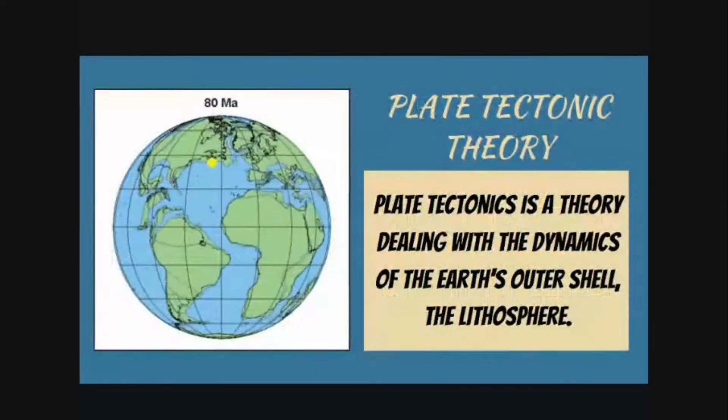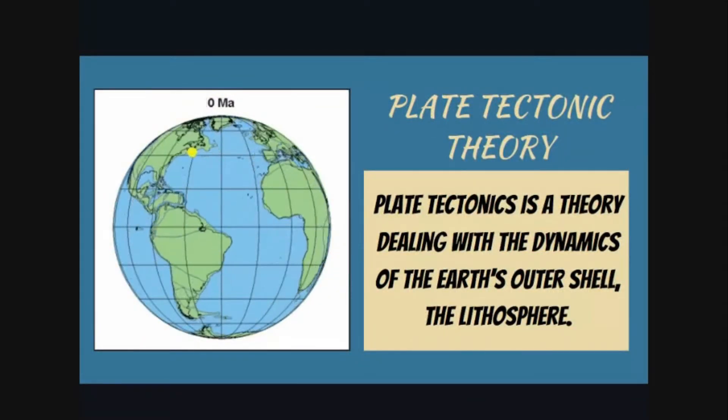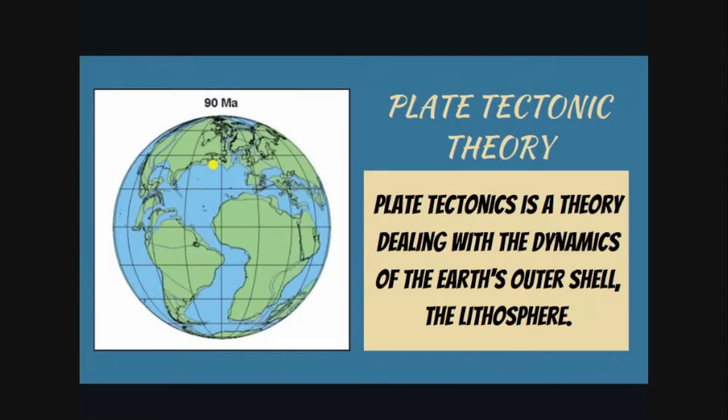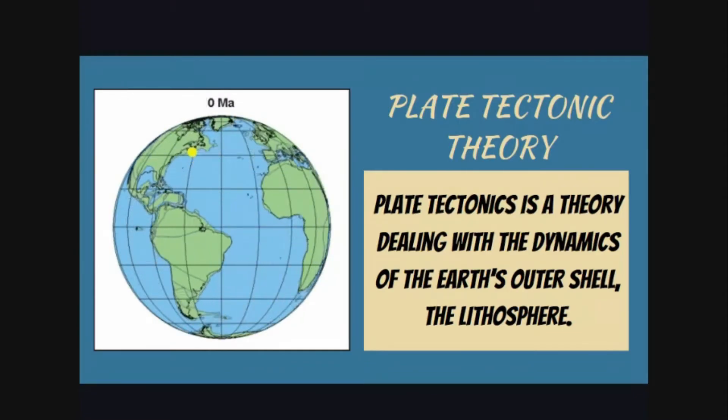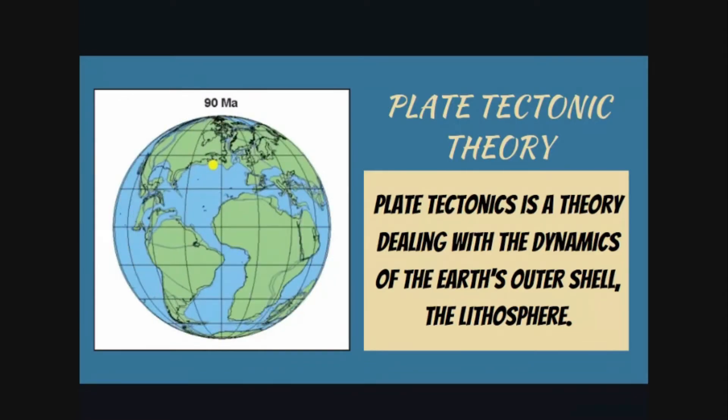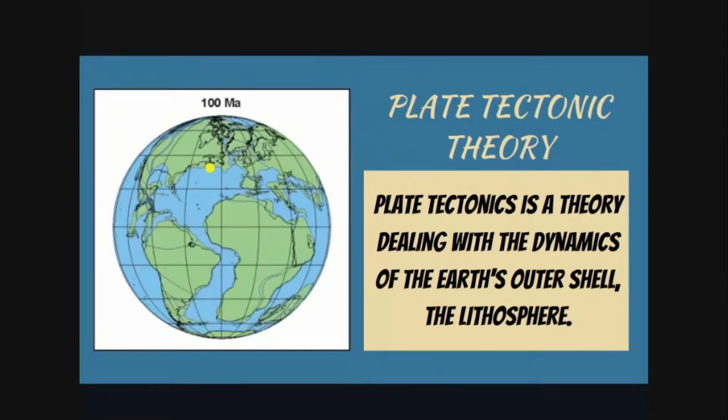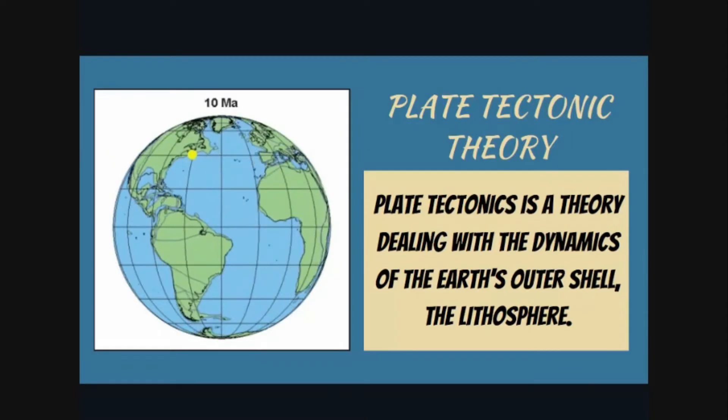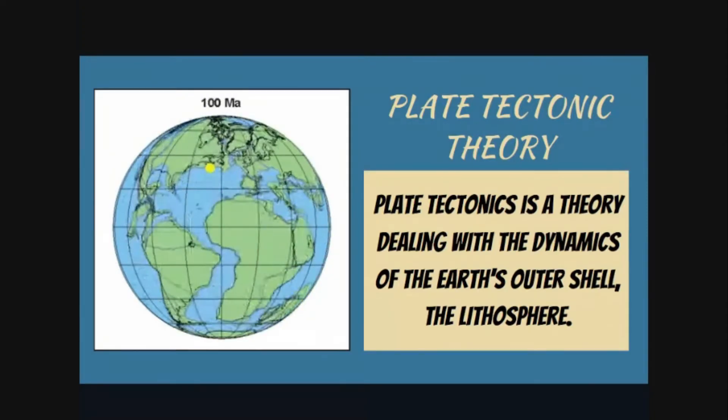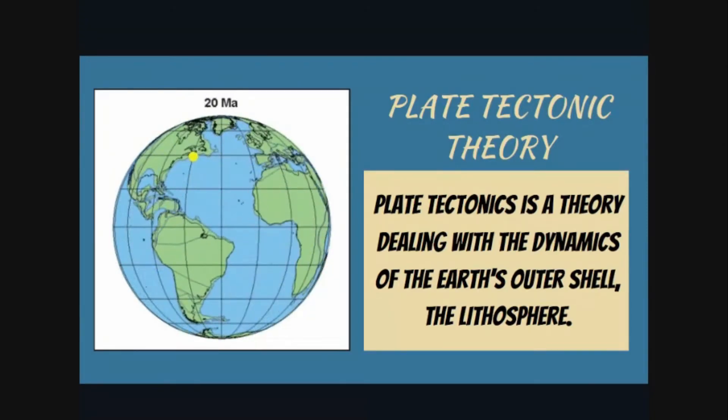In the previous lessons about the internal structure of the earth and the theory of plate tectonics, it was explained that the outermost rigid layer of the earth, the lithosphere, is broken into several segments called plates. These lithospheric plates are in motion.